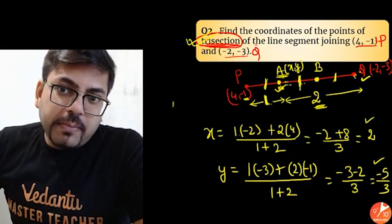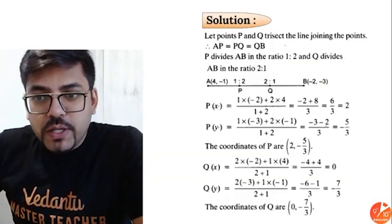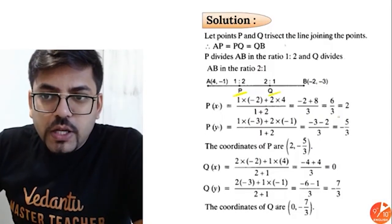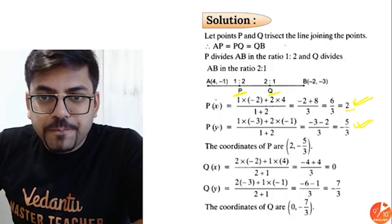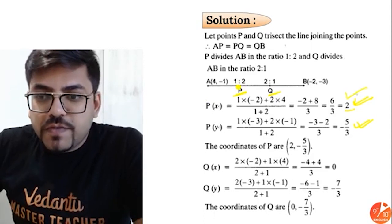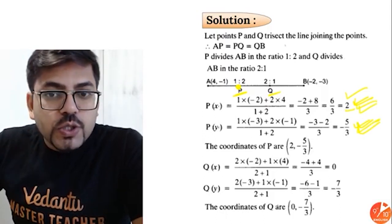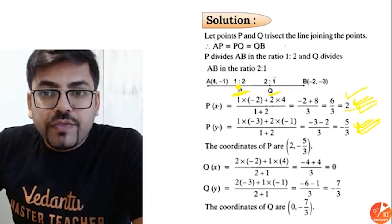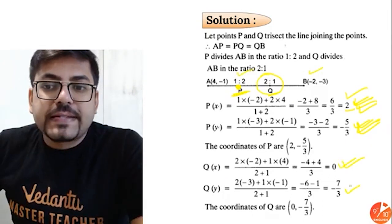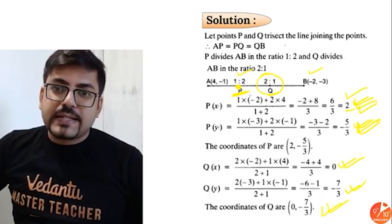After applying the midpoint formula, the first point we got is 2 comma minus 5 by 3 — they also got 2 comma minus 5 by 3. And then using this first point, you can find the second point B which is the midpoint of A and Q, giving 0 comma minus 7 by 3. So the answer for P is 2 comma minus 5 by 3 and the answer for Q is 0 comma minus 7 by 3.